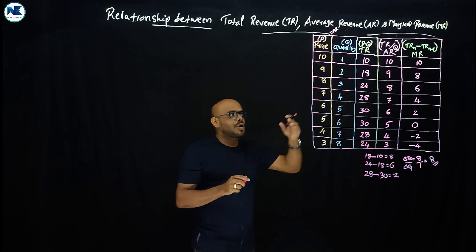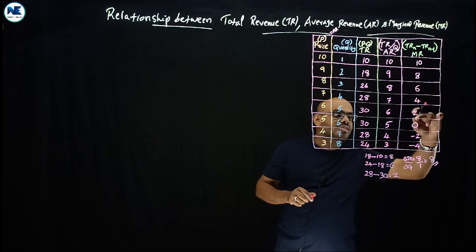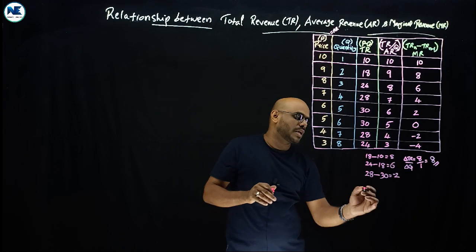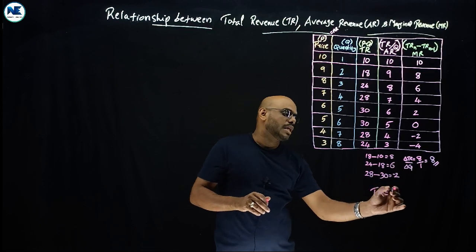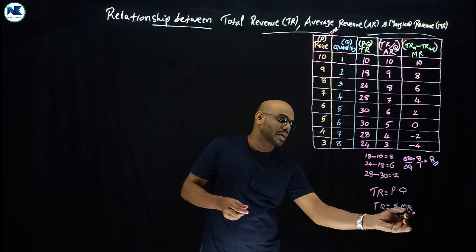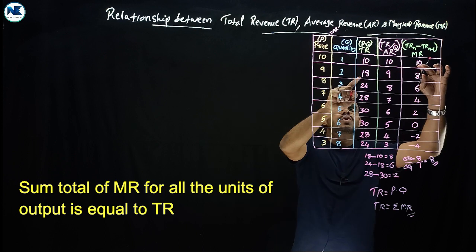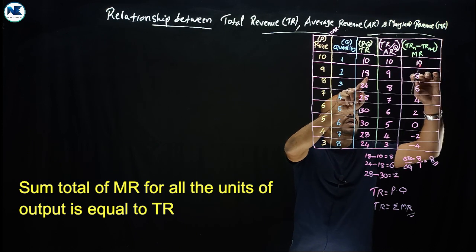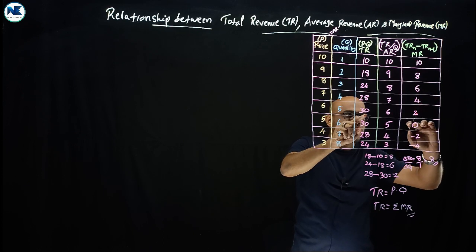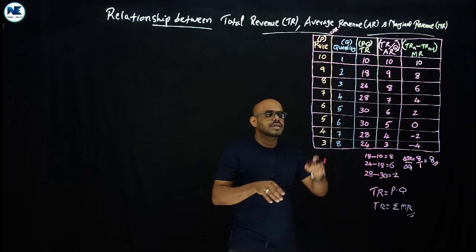Regarding the behavior of marginal revenue: it continuously declines, reaches zero, and after that becomes negative. Additionally, total revenue is equal to the summation of marginal revenue — TR = ΣMR. For example, TR of 18 = 10 + 8; TR of 24 = 10 + 8 + 6; TR of 28 = 10 + 8 + 6 + 4; and so on. The summation of marginal revenues gives total revenue.